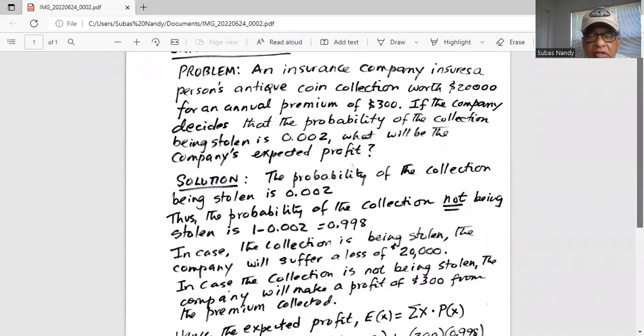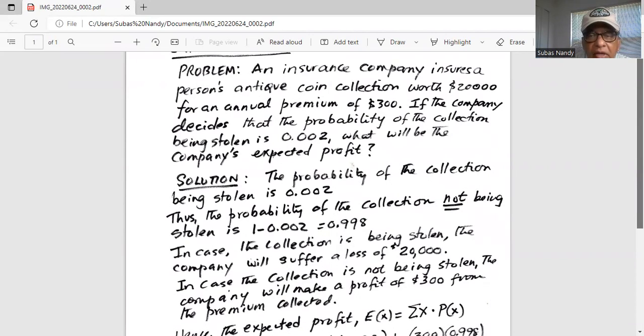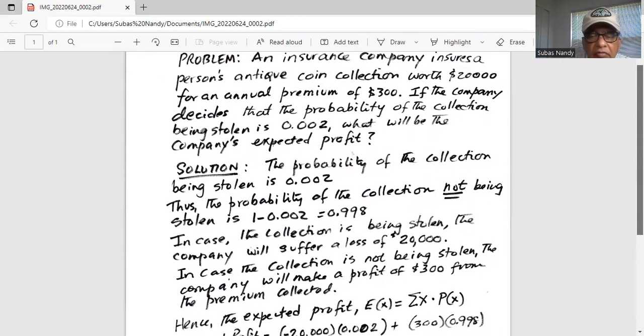In case the collection is being stolen, the company will suffer a loss of $20,000 because that's what its value is of the collection. In case the collection is not being stolen, the company will make a profit of $300 from the premium collected.